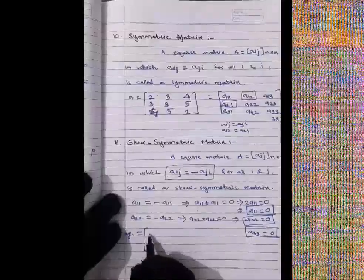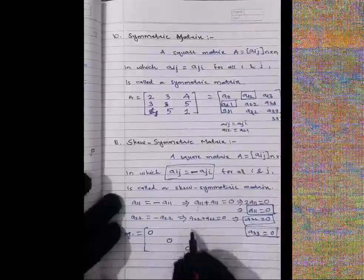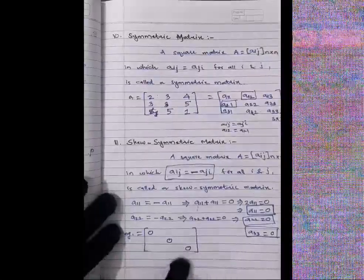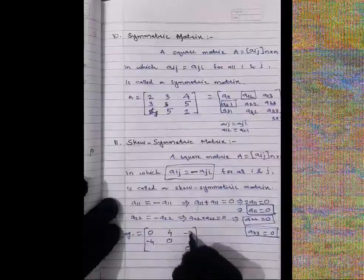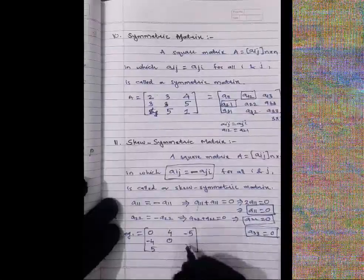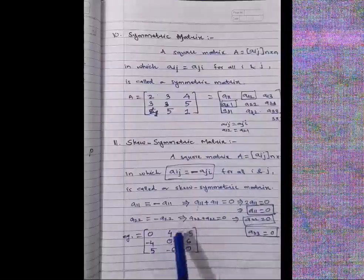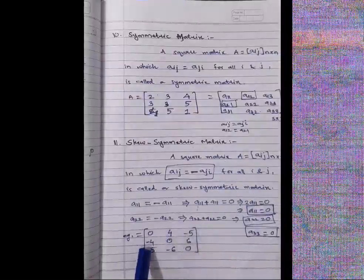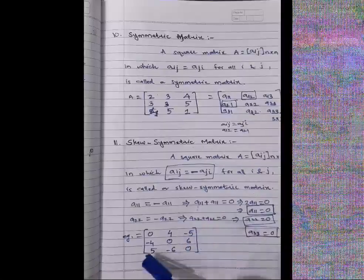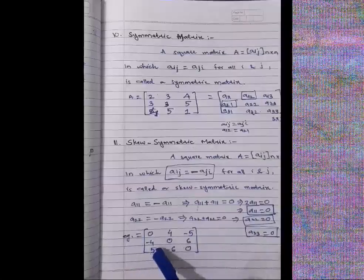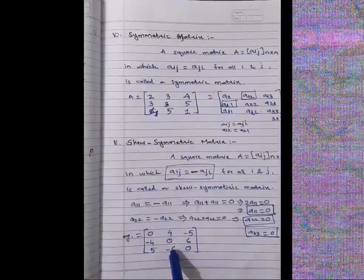Example of a skew-symmetric matrix: diagonal elements are all 0. Non-diagonal elements: A₁₂ = 4 so A₂₁ = −4; A₁₃ = −5 so A₃₁ = 5 (minus of minus is plus); A₂₃ = 6 so A₃₂ = −6. This confirms Aᵢⱼ = −Aⱼᵢ for all pairs.